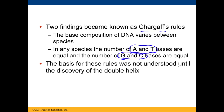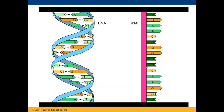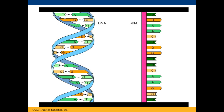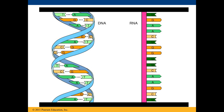Although Chargaff discovered this, he wasn't sure why — because we had not yet discovered the structure of DNA. DNA is a double helix made up of two strands held together in the middle by hydrogen bonds due to complementary base pairing. It turns out that A always pairs with T, and C always pairs with G. Since every time you have an A you're going to have a T, and every time you have a C you're going to have a G, that explains Chargaff's rule.